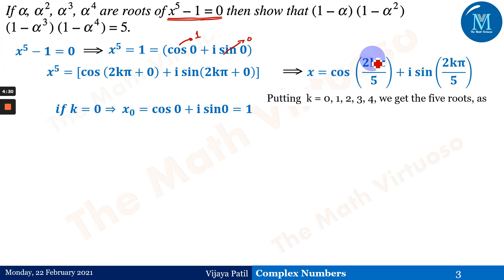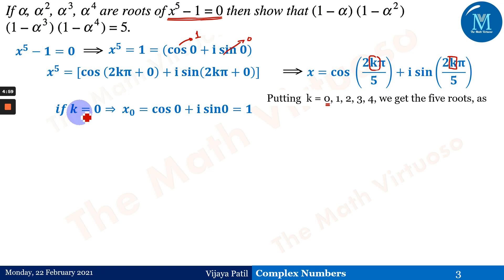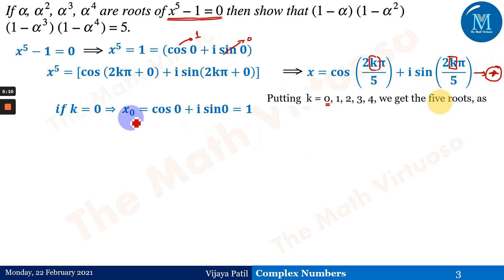We substitute k = 0, 1, 2, 3, 4 into the formula. We will not go up to k = 5, because the equation x⁵ − 1 = 0 has exactly 5 roots, not 6. Starting from k = 0, putting k = 0 into the equation (call it the star equation), we get x₀.